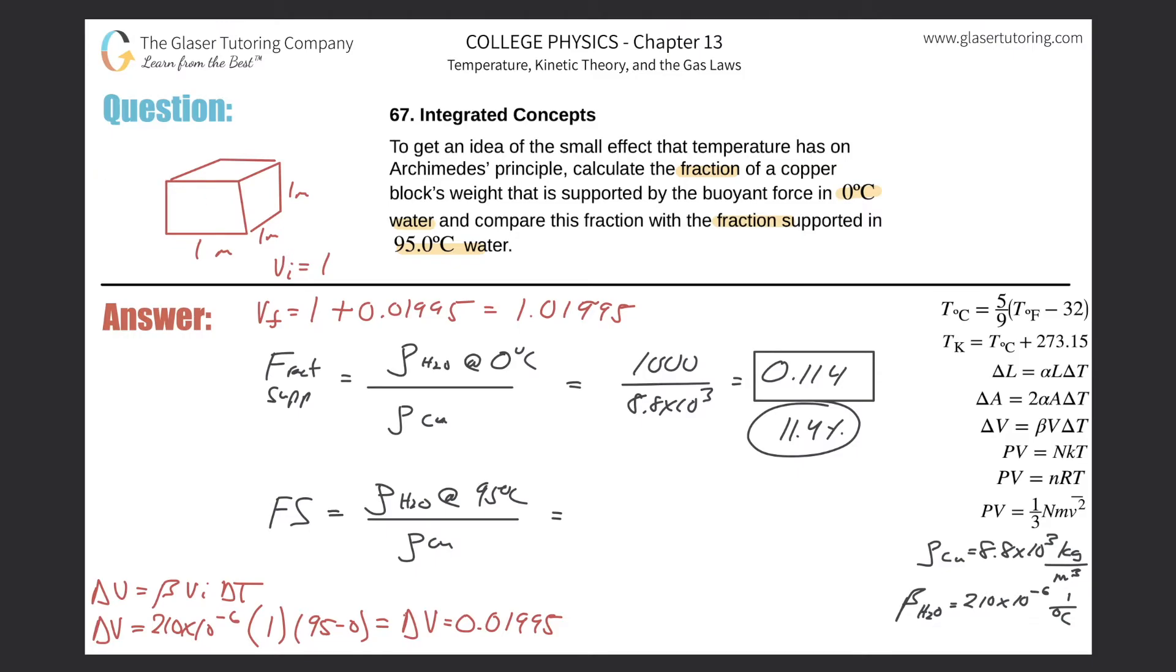So if the volume of this water has expanded but the particles of water has remained the same, meaning the mass has remained the same, what happens to the density? Here's the formula: density equals mass over volume. If volume goes up and mass stays the same, mathematically density has to go down. You're dividing by a larger value.